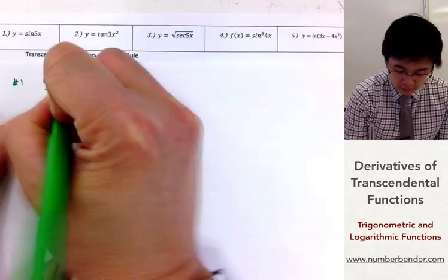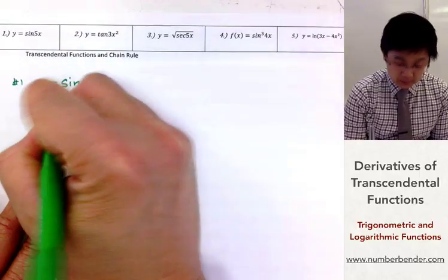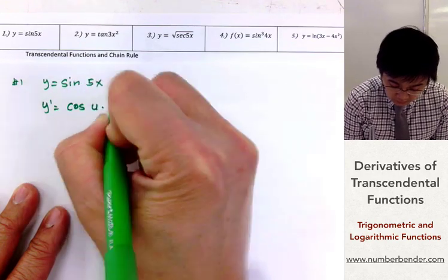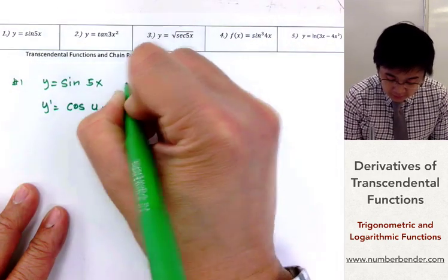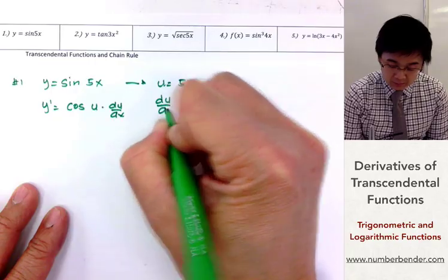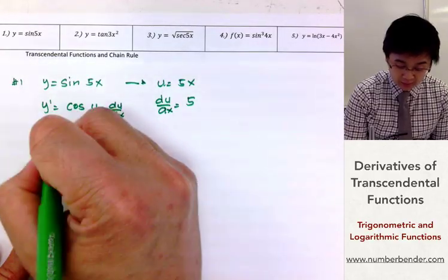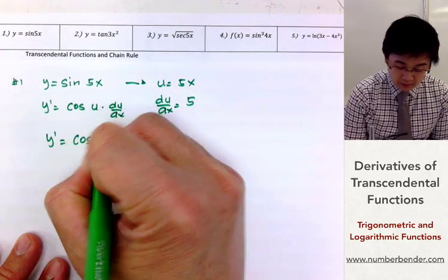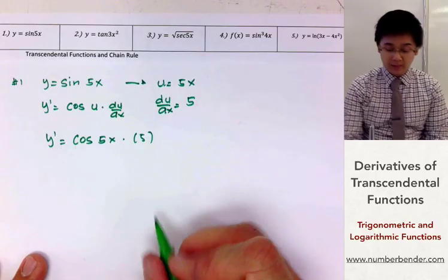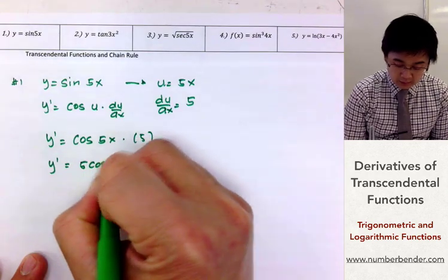Number one, we have y equals sine 5x. Since we're working on the derivative of sine x, we know the derivative of sine x is going to be cosine u times du/dx. In this particular function, u is 5x and du/dx is going to be 5. So y prime is therefore cosine 5x multiplied by 5.